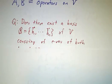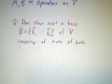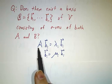We would like to ask, does there exist a basis consisting of eigenvectors of both A and B? In other words, if you work in the basis B, every basis vector is an eigenvector of A, let's say with eigenvalue λi,